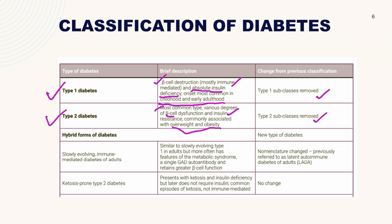The classification continues with hybrid forms of diabetes. The first is slowly evolving immune-mediated diabetes of adults, previously called LADA — latent autoimmune diabetes of adults. It is similar to type 1 diabetes in adults but has more features of metabolic syndrome, with a single autoantibody GAD and greater preservation of beta cell function. The second hybrid form is ketosis-prone type 2 diabetes, which presents as ketosis and insulin deficiency but later does not require insulin, with common episodes of ketosis but not immune-related.